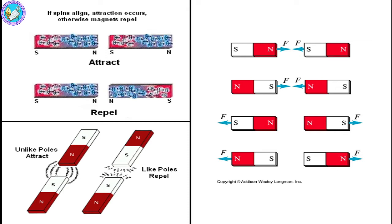When there are different poles of the magnets, you will get attraction. When you have the same poles, there will be repulsion, where the element of the spins will move in the same direction at a particular moment. These diagrams show the opposite poles and the same position of the poles.